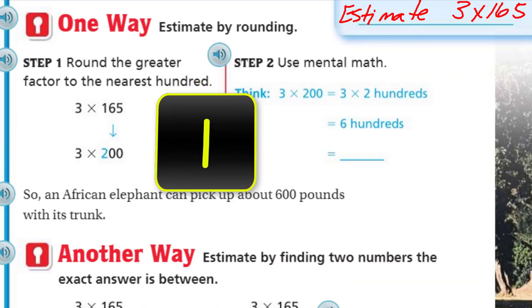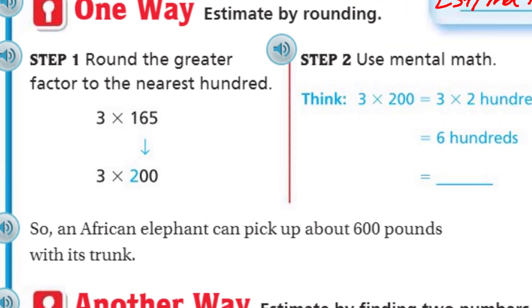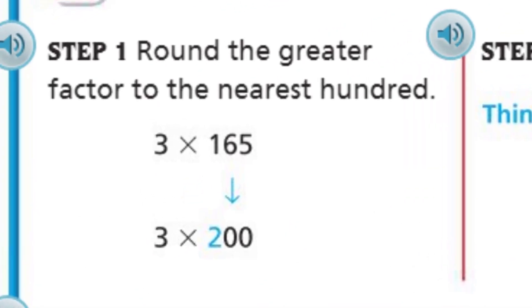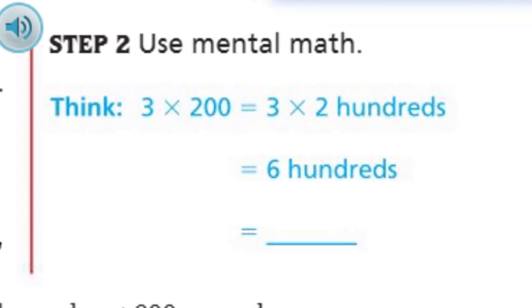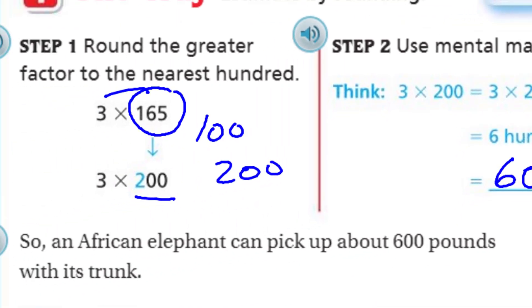It states one way: estimate by rounding. Step one, round the greater factor to the nearest hundred. If you look at this, the greater factor is the 165, it's greater than the three. One way you could do it is just round it to the nearest hundred. In this case, because we're talking about a hundred, that's why they changed it to 200. It's closer to 200. Step two, use mental math. Three times 200 is equal to three times two hundreds, which is equal to six hundreds, which is equal to 600.